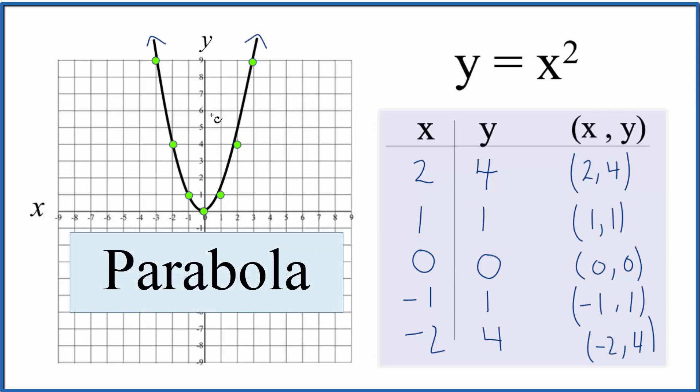It's a parabola. It's symmetrical along the y-axis. We have the vertex here at 0, 0. So a table of values is a useful way for us to be able to draw the graphs of these equations, like y equals x squared. This is Dr.